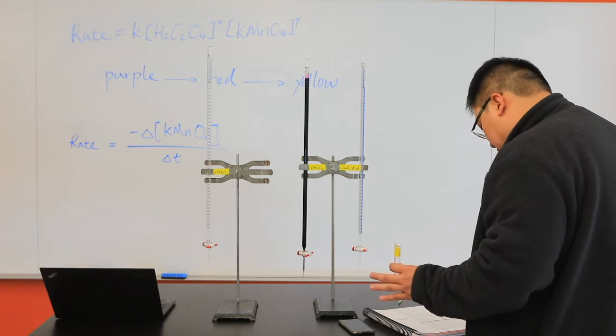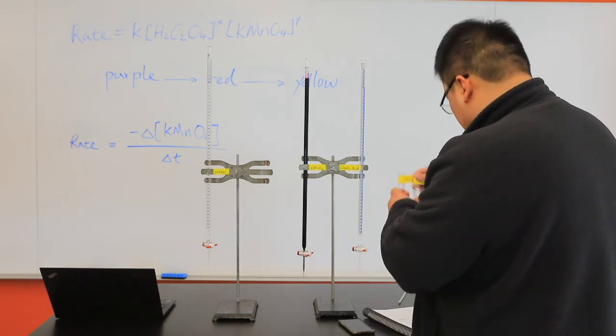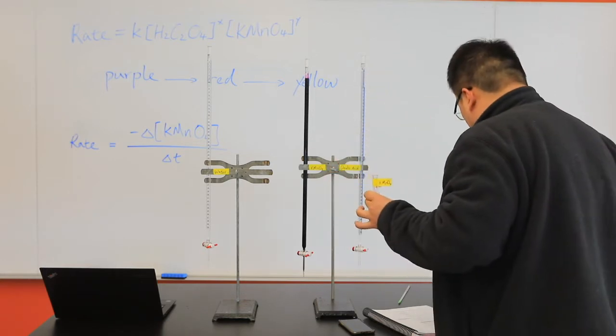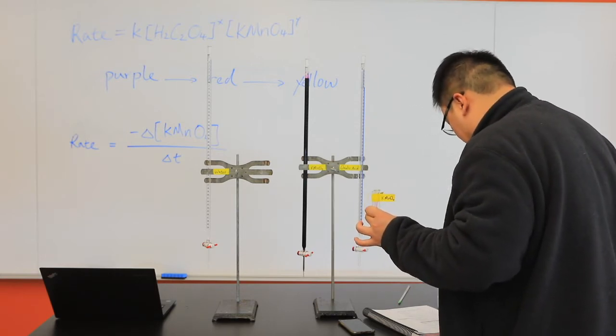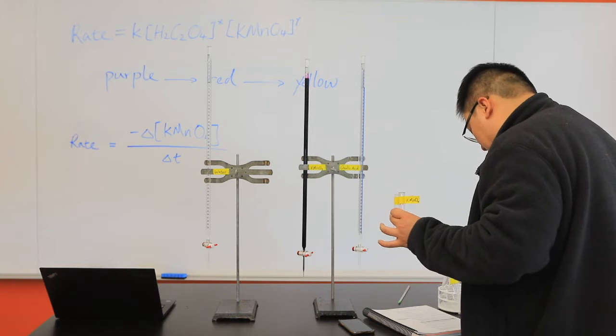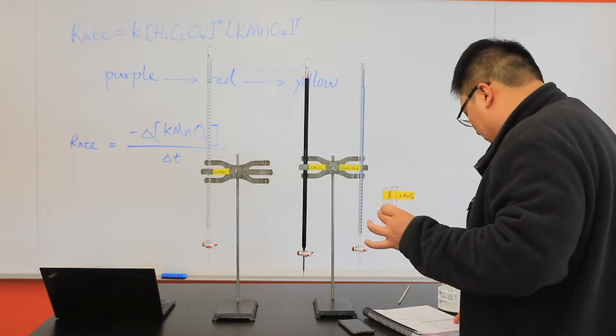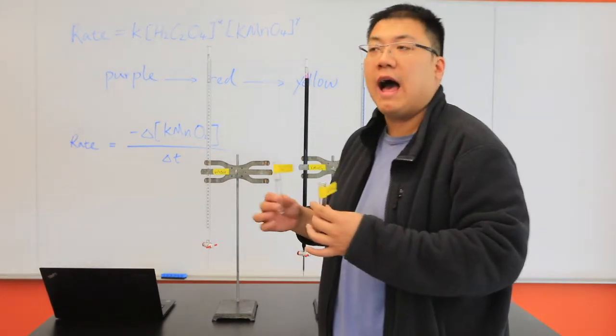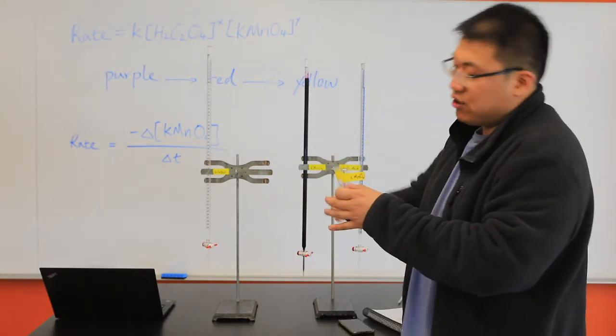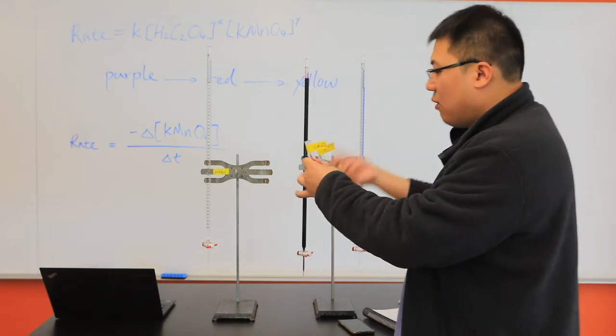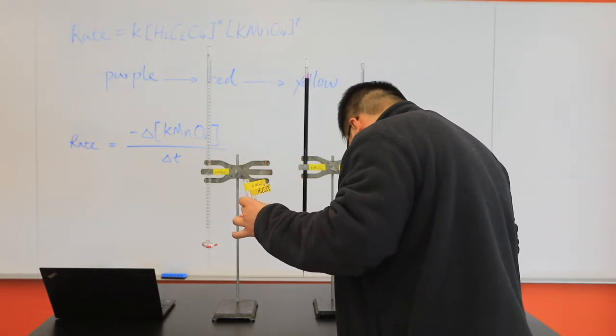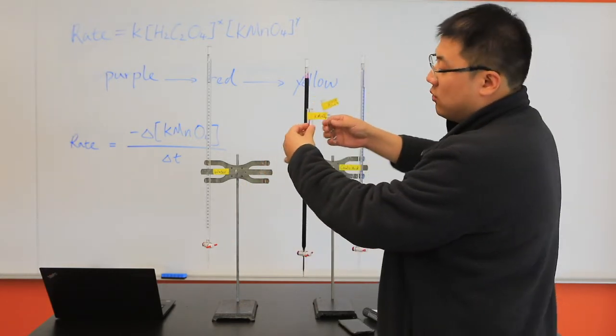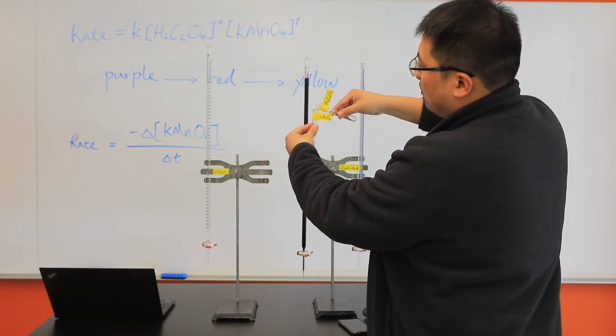So, following the instructions, I'm going to add the oxalic acid water mixture to the potassium permanganate test tube. I really should start timing when I am halfway at the addition of the oxalic acid solution to the potassium permanganate. Since I'm the only one recording it, I will start my timer after I poured in the entire test tube of the oxalic acid into potassium permanganate. So, I'll just count 1, 2, 3, and go. 1, 2, 3, go.